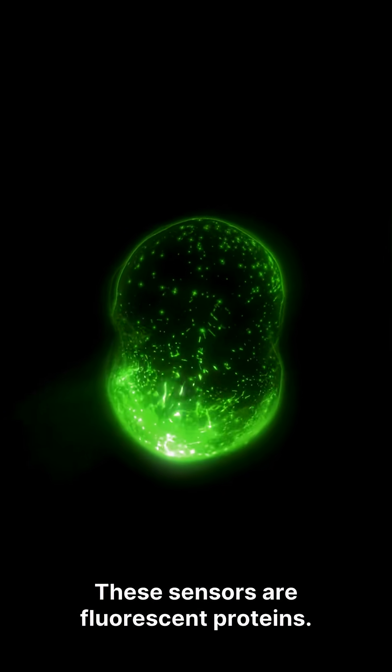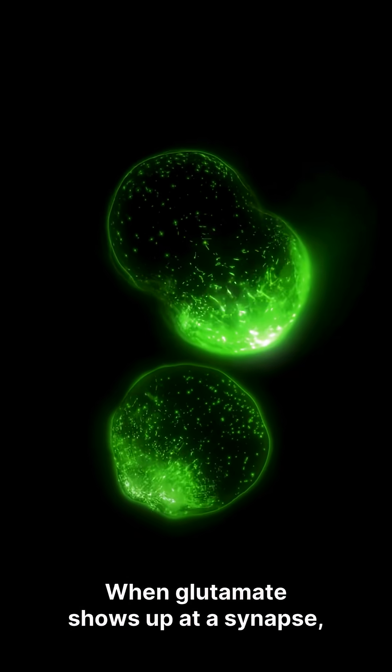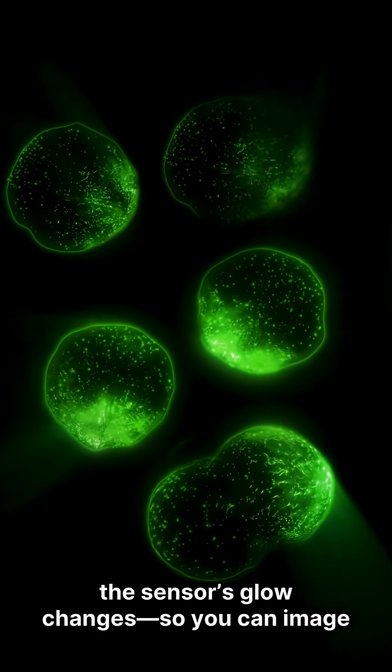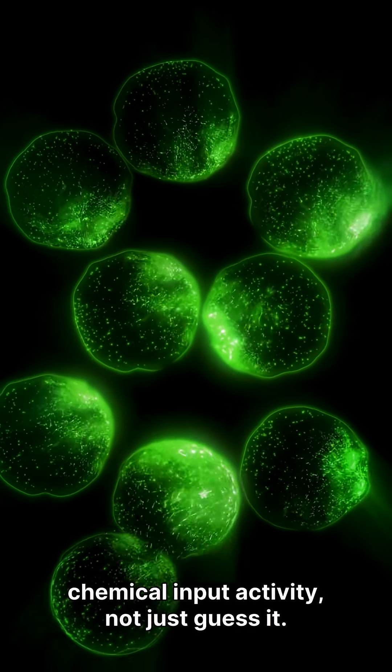These sensors are fluorescent proteins. When glutamate shows up at a synapse, the sensor's glow changes. So you can image chemical input activity, not just guess it.